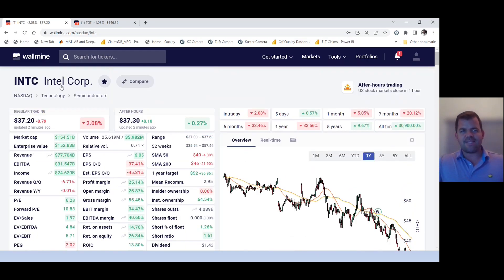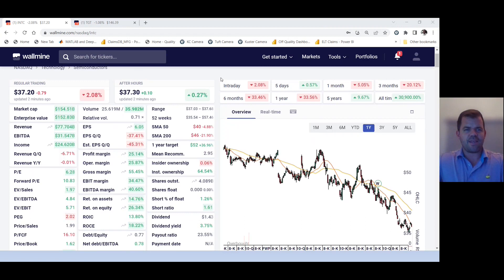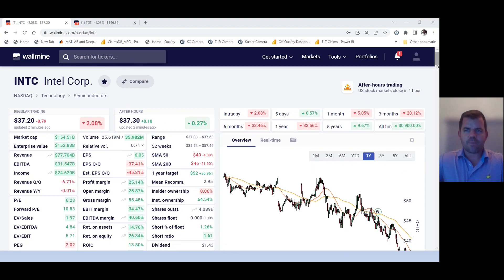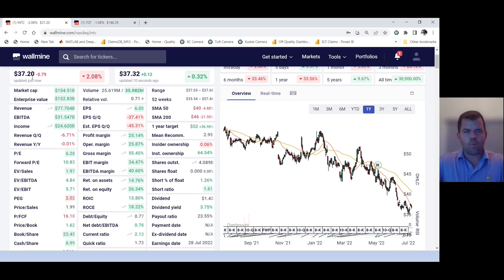The first one is Intel, INTC. I use Wallmine for my quick analysis. It's free. You sign in and you sign up for it. So it's a really nifty site. So I'm going to scroll down some here. So the current price, $37.20. It looks like it's got a little activity after hours. It's okay. For what we're doing, we don't have to be to the penny because we're looking at four years and we're really just sizing it up as if we're buying the whole company.